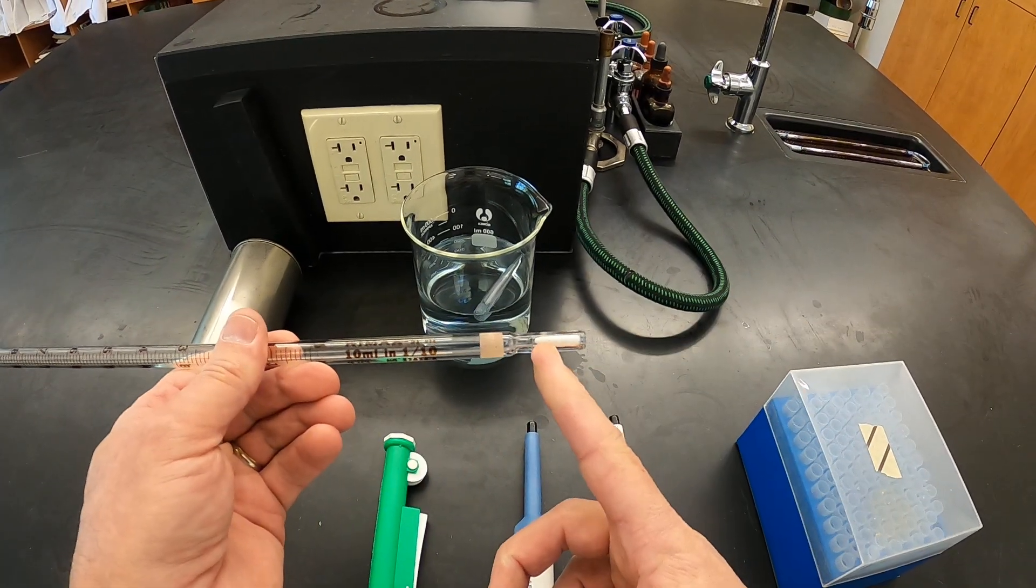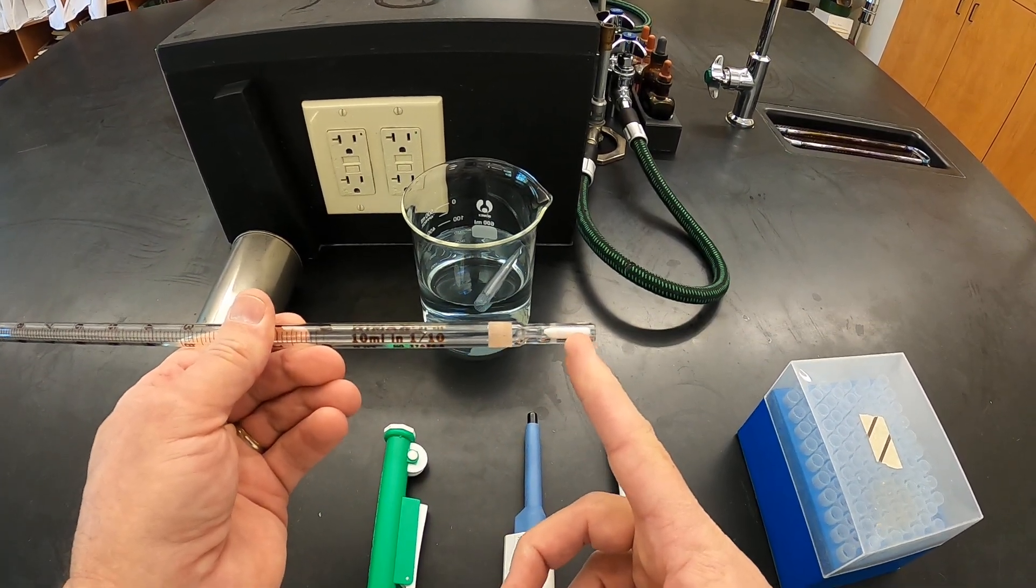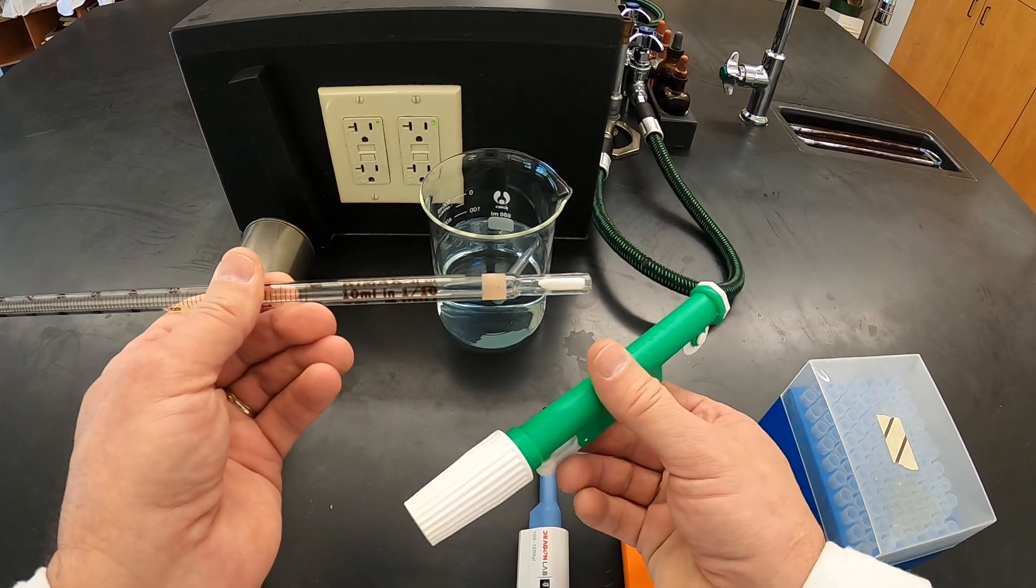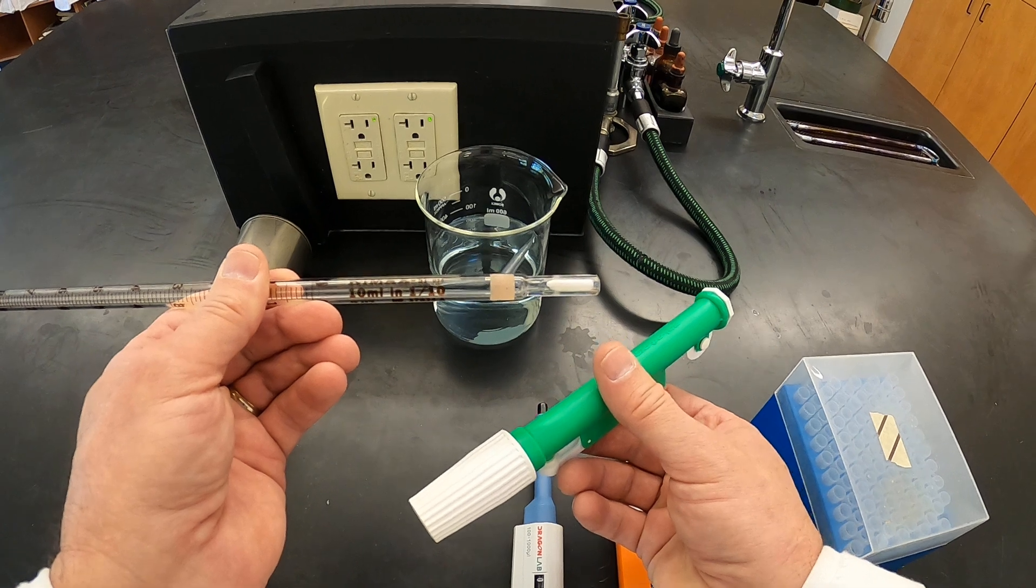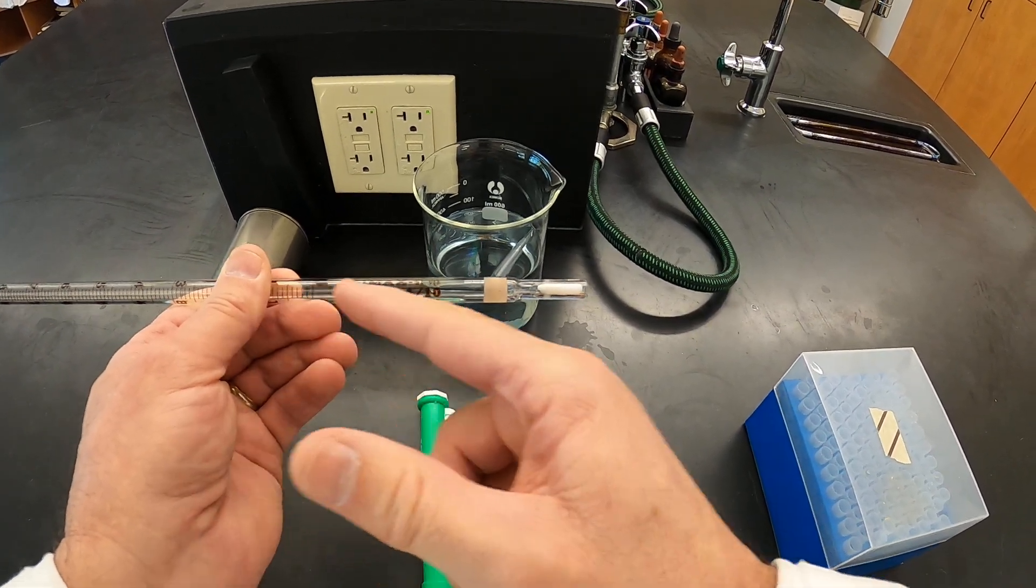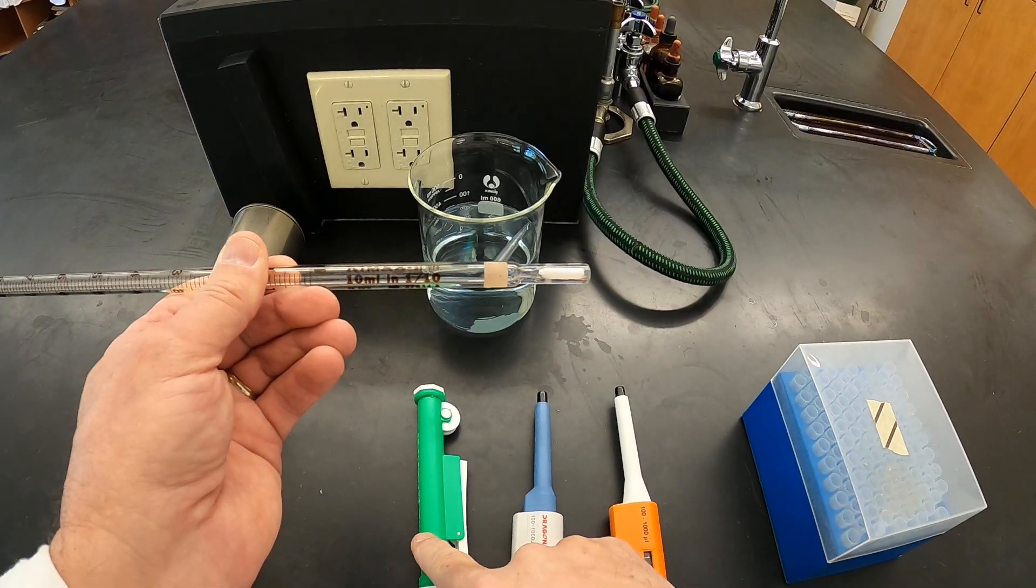You also notice right here at the top there is a piece of cotton that is used to protect the pipetting device, whichever one we're using, to prevent any liquid or bacteria from going up into the pipetting device itself.